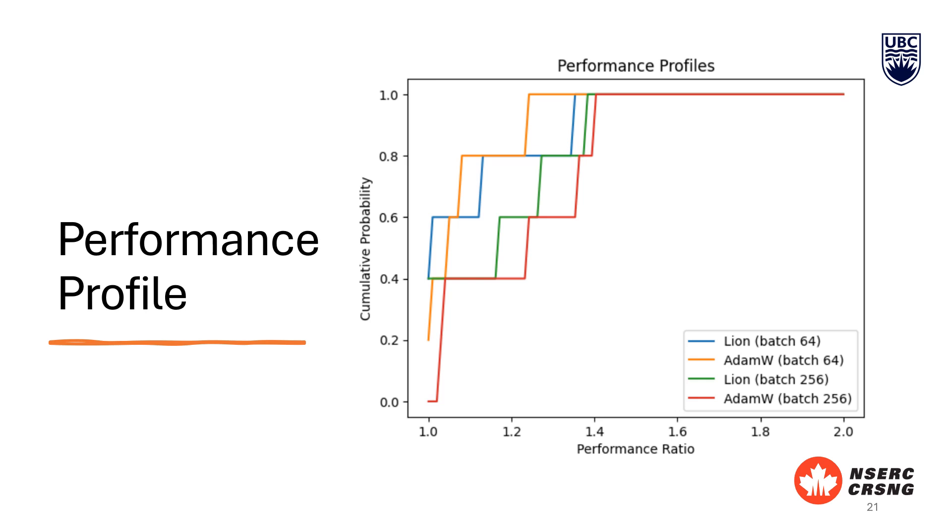Y-axis shows the proportion of problems that each solver can solve within a given performance ratio. AdamW with batch size 64 is the quickest solver as it reaches a cumulative probability of 1 at a lower performance ratio. It demonstrates superior performance compared to other algorithms.